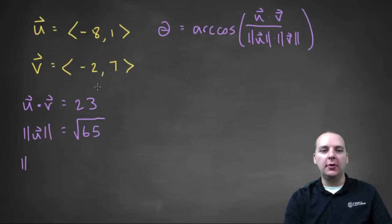And the magnitude of v, that would be, let's see, the square root of forty-nine and four, so that would make the square root of fifty-three.